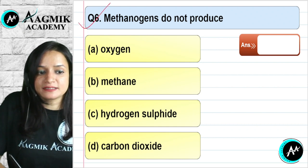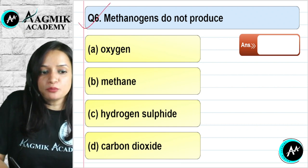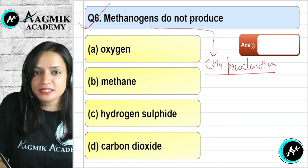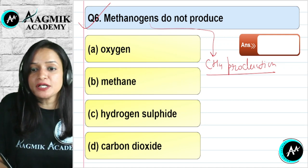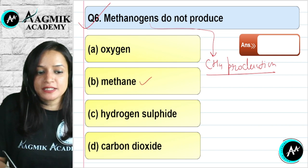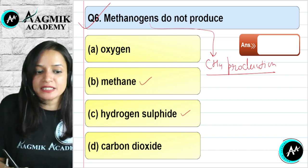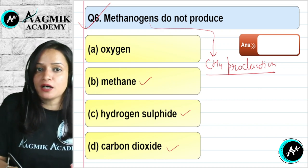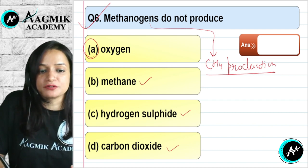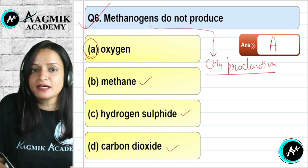Question number 6: Methanogens do not produce which gas? The word 'methano' comes from methane and 'gen' means production. Methanogens produce methane as the main gas, hydrogen sulfide, and a little carbon dioxide. But there is no production of oxygen by methanogens. So the correct option is A.